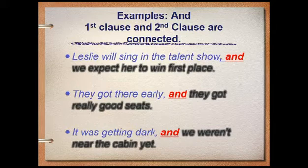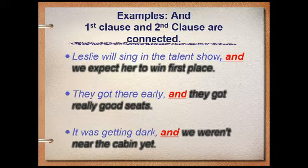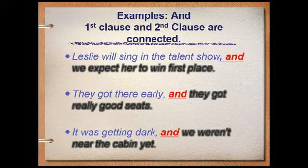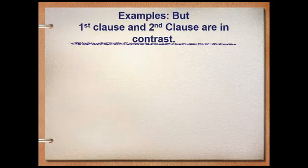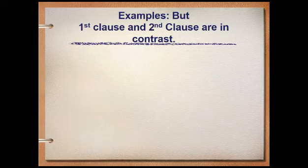These are examples of compound sentences using 'and.' Remember, place a comma after your first clause before your coordinating conjunction. Next conjunction: 'but.' Use 'but' if your first clause and second clause are in contrast.